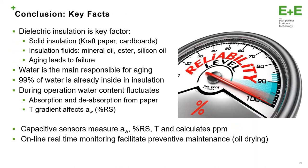So at the end, the last slide, the conclusion of today's discussion. The electric insulation plays a key factor inside the transformer — we have solid insulation and insulation fluids which are exposed to aging because of the working of the transformer. The aging leads to failure. Water is the main responsible factor of aging, and 90% of the water is already in the insulation layers. During operation, the water content is changing because of the temperature variation, temperature gradients, and the absorption of water molecules from the paper. So thanks to the capacitive sensor, we can measure the oil condition and the water presence inside the oil in real time, and we can facilitate preventive maintenance for the transformers.